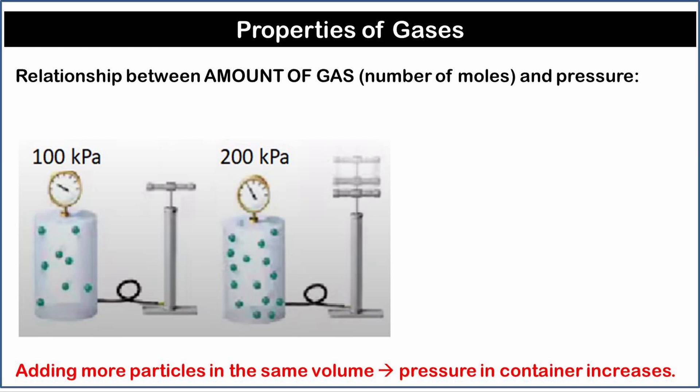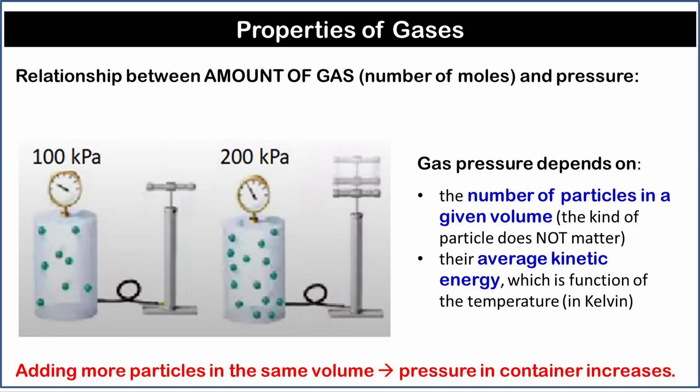When you add more gas particles, the pressure in the container increases. If you double the number of particles, the pressure will double. Gas pressure depends only on the number of particles in a given volume, and on their average kinetic energy, which is function of the temperature in Kelvin. The kind of particles does not matter.